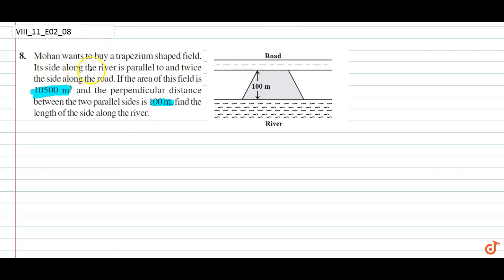Its side along the river is parallel to and twice the side along the road. If this is x, this is 2x. So, area of trapezium...